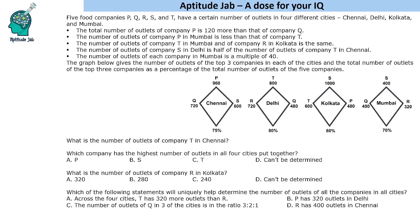Hello everyone, welcome to Aptitude Jab. This set says that there are five food companies P, Q, R, S, T and they have a certain number of outlets in four different cities. We are given certain conditions and a graph. This graph gives the number of outlets of the top three companies in each of the cities, and the total number of outlets of the top three companies as a percentage of the total number of outlets of the five companies.